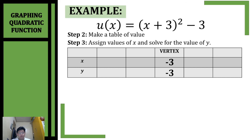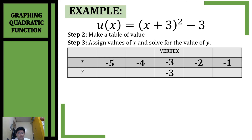Step 3: assign the values of x and solve for the value of y. Numbers closer to our x-coordinate of our vertex — negative 3 — so we have negative 2, negative 1 on the right side, and negative 4, negative 5 on the left side.